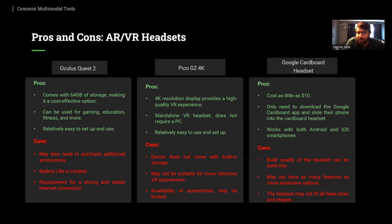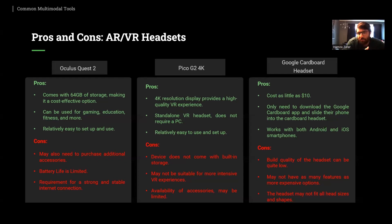The third headset is the Google Cardboard, which costs as little as $10 — less than $10. You only need to download the Google Cardboard app and slide your phone into the cardboard headset, and it works with both Android and iOS smartphones. However, the build quality is quite low as it is made of cardboard, it may not have many features compared to more expensive options, and the headset may not fit all head sizes and shapes.